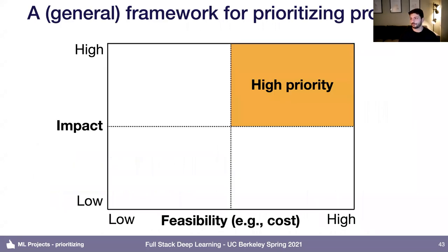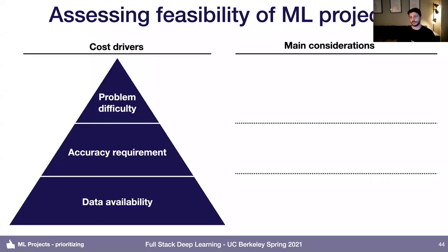Coming back to our framework for prioritizing projects. We talked about some ways to assess the impact of projects. The other axis is feasibility — how do you know how feasible a machine learning project is going to be, or how much will it cost? I like to think of the three main cost drivers of a machine learning project as, in order of importance: data availability (most important), accuracy requirement, and the intrinsic difficulty of the problem itself.